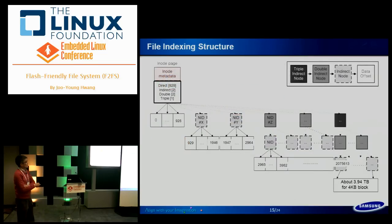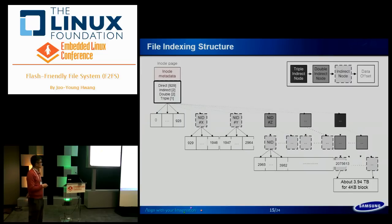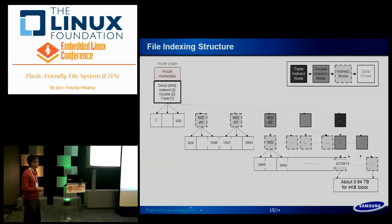The file indexing structure has an inode with up to triple indirect pointers, allowing addressing of nearly 4 terabytes per file with a 4 KB block size.